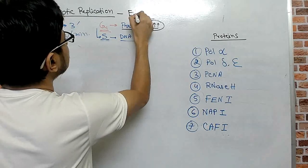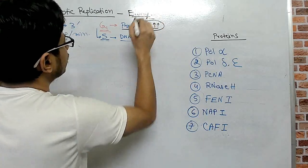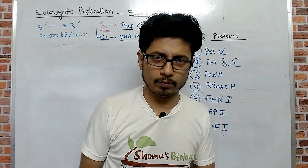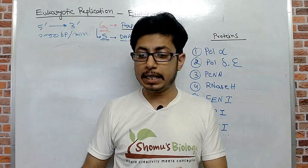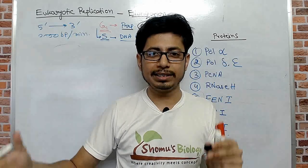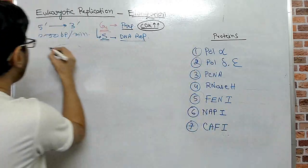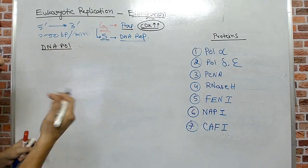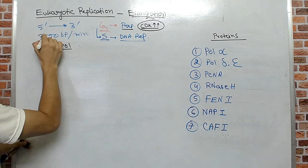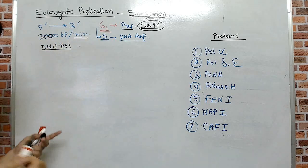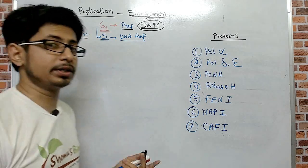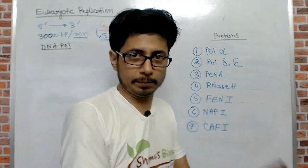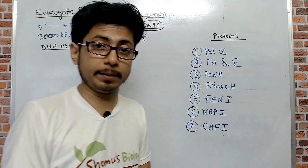The elongation process is not that difficult or different. The actual process of elongation — what do we mean by elongation? It's simply the polymerization of the newly synthesizing DNA strand, just as DNA polymerization. In eukaryotes, 3000 bases are added per minute by the eukaryotic DNA polymerase enzyme.